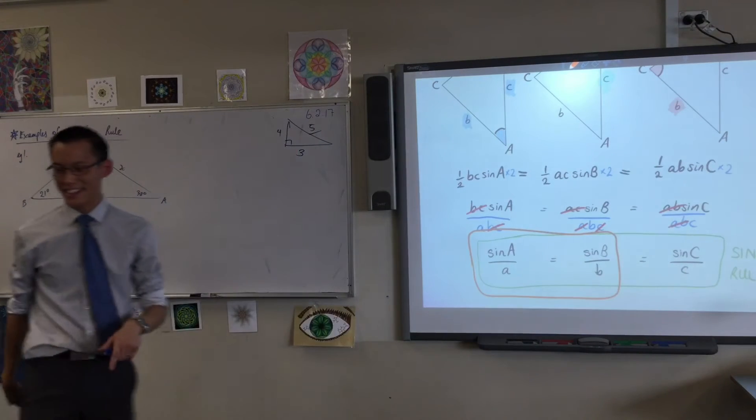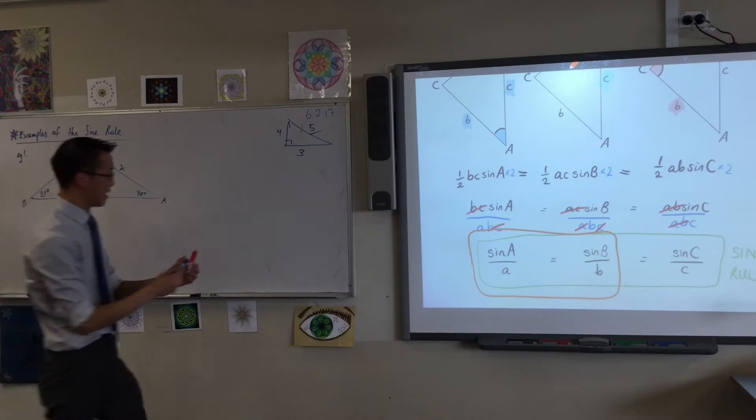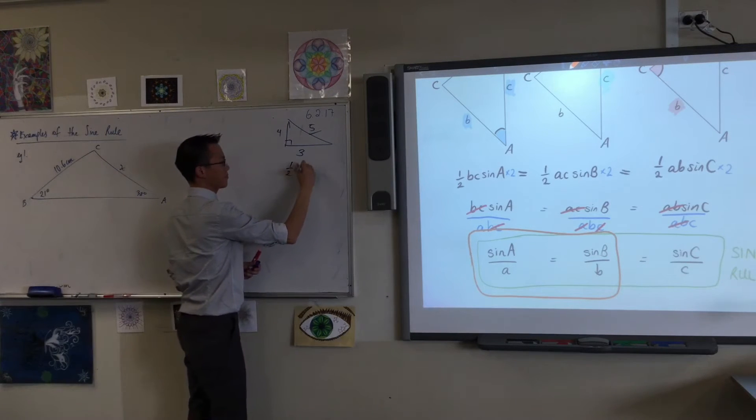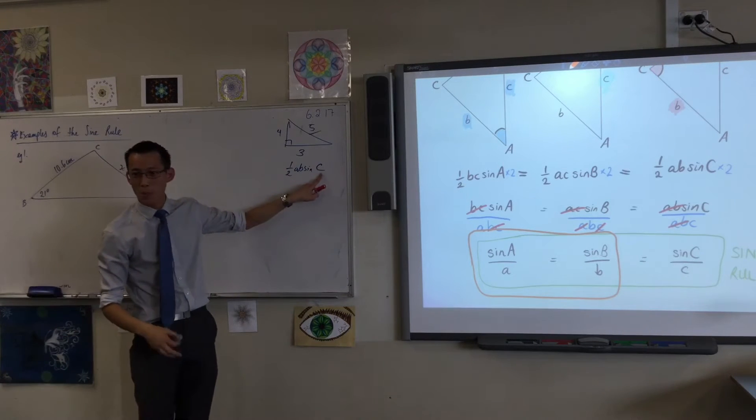Remember we've been saying it's really important that you name things properly and if you pay attention to those names. So for example, that a B sine C thing - you've got to know that this angle is opposite which side.